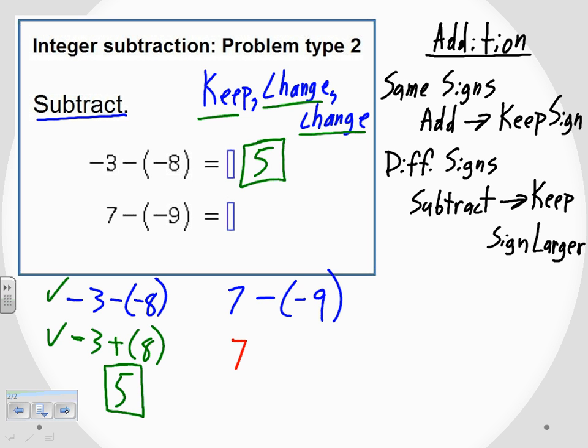I change the operation from subtraction into addition. And then I change the sign of the last number. So instead of being a negative 9, it becomes a positive 9.